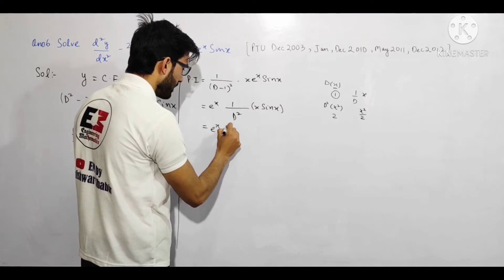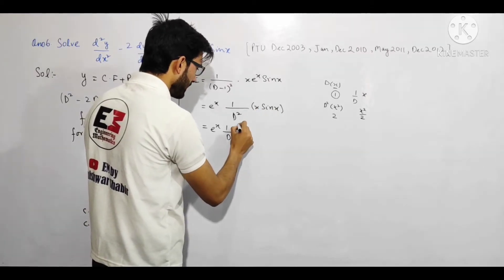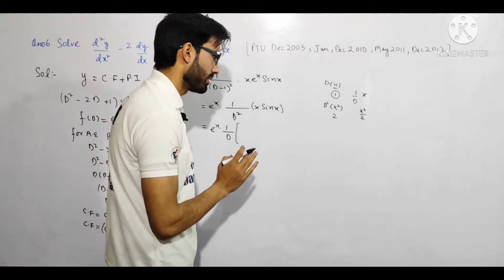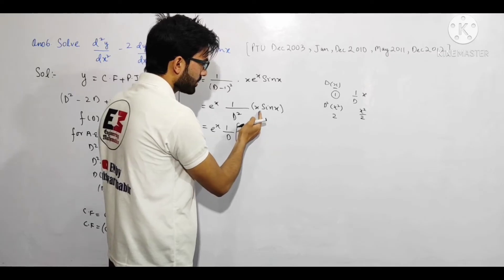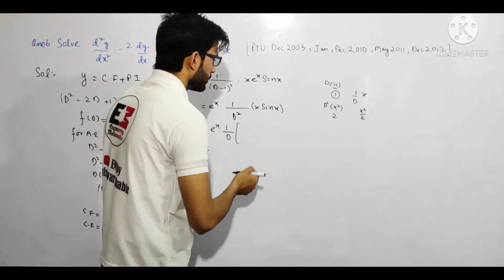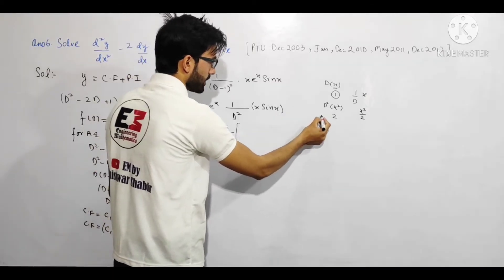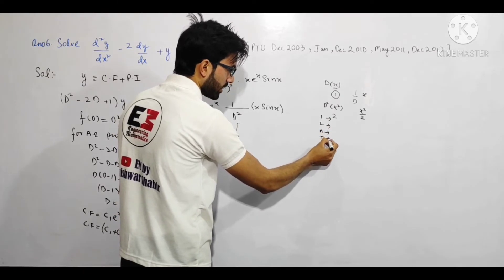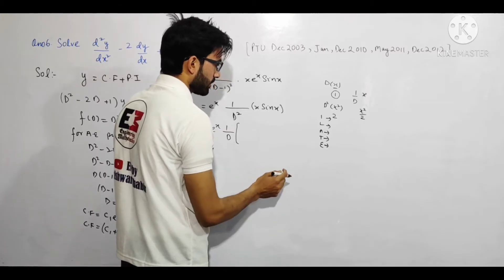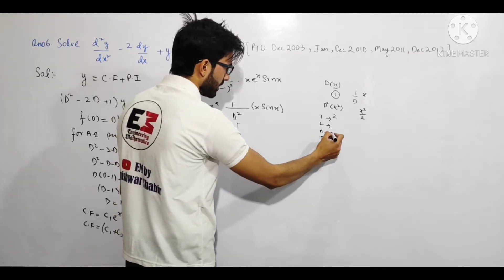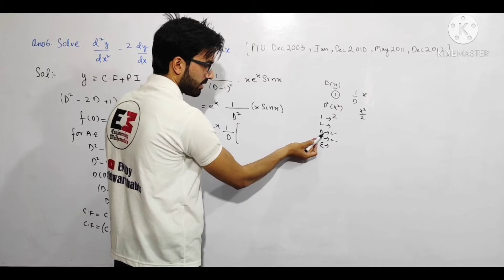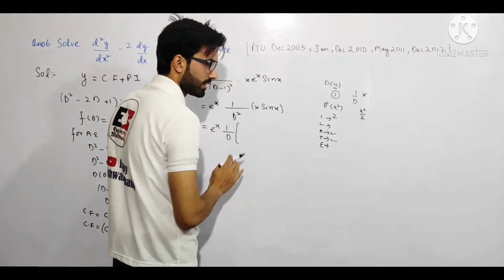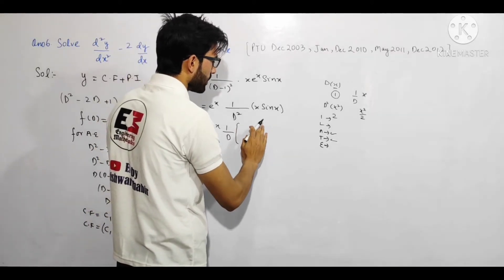Yahan pe integration by parts lagegi kyunki do functions hain: x (algebraic) aur sin x (trigonometric). ILATE rule se: pehle algebraic, phir trigonometric. Toh x pehli function aur sin x doosri function. Integration by parts formula: ∫u·v dx = u·∫v dx - ∫(du/dx · ∫v dx) dx.